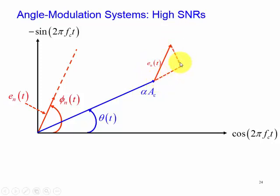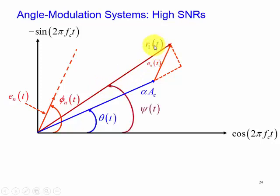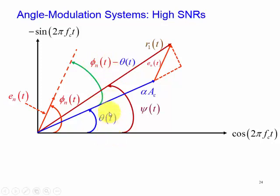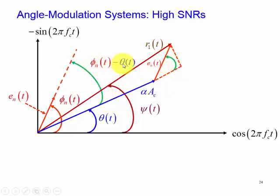One component is along alpha_ac and one is perpendicular to alpha_ac. Here is our resultant r(t), which has an angle of psi. We note that this angle is just the difference between phi_n(t), the noise angle, minus the angle of our carrier signal theta(t). This angle will be the same as the angle between the components, so this angle equals phi_n(t) minus theta(t).